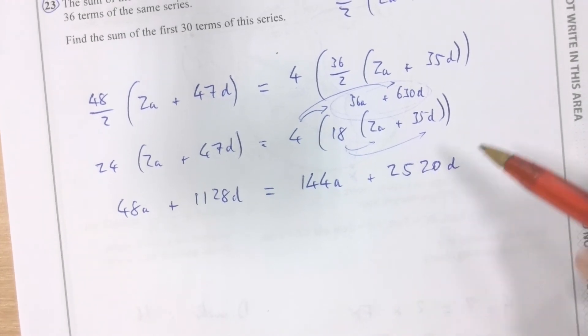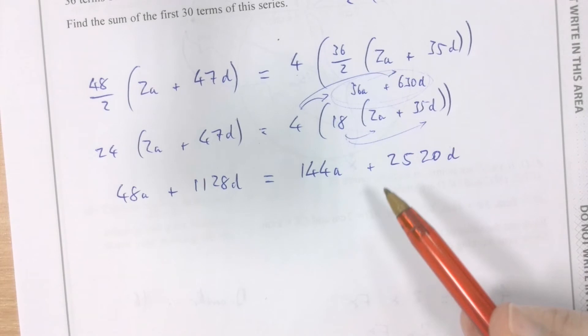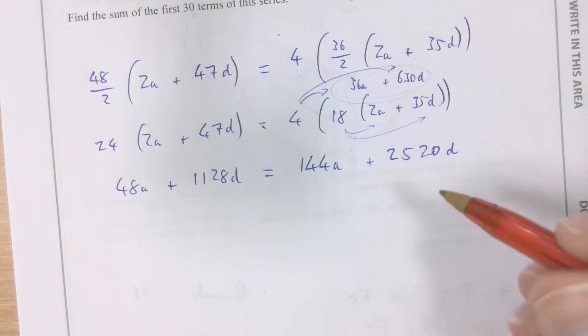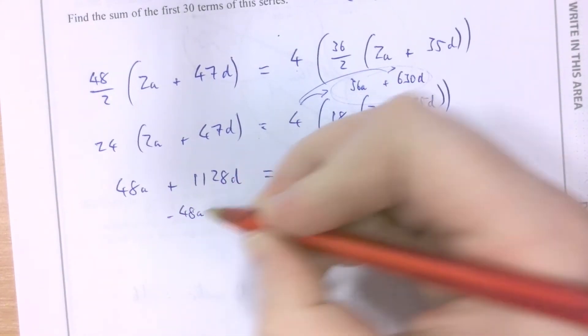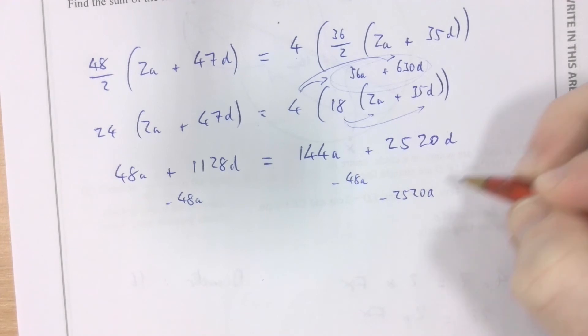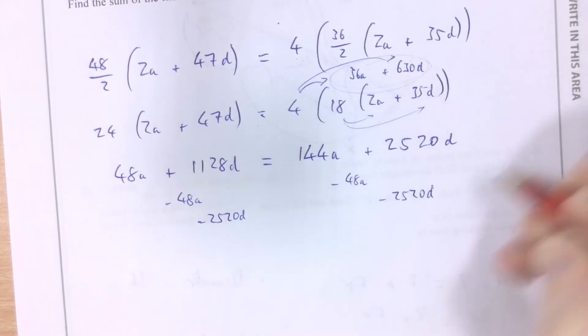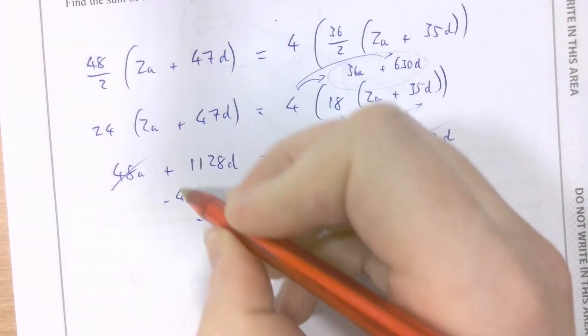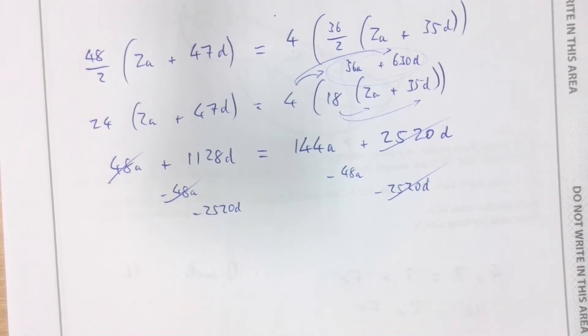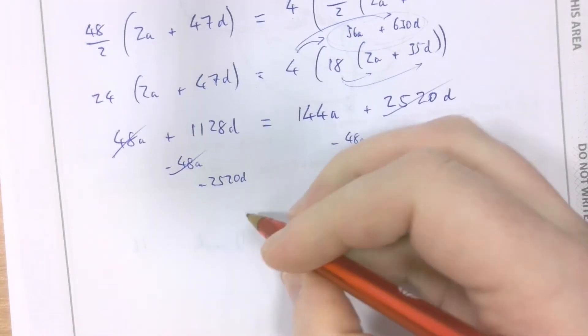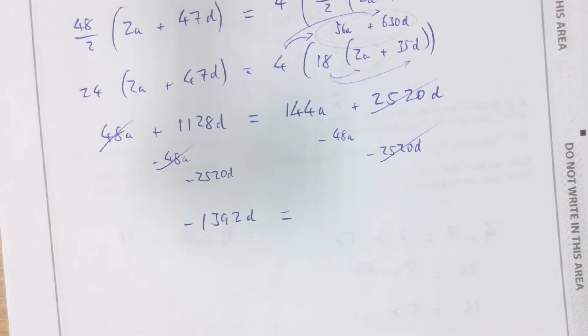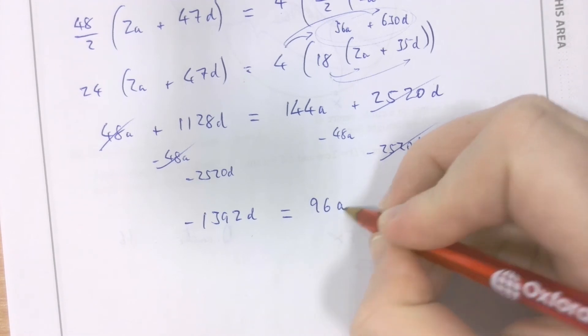Now, I'm tempted to maybe make one of these the subject. I'm going to choose a here. You can choose whichever one you like when you're doing this yourself. I'm choosing to make a the subject. So let's take away 48a from both sides. And at the same time, why don't we take away 2520d from both sides? So this 2520d disappears, this 48a disappears, and then the operations that are left, we're obviously going to do 1,128d, take away 2,520d, leaves me with negative 1,392d. And then 144, take away 48, that's 96a.